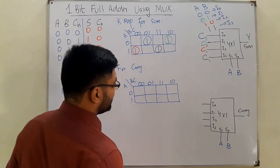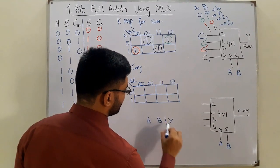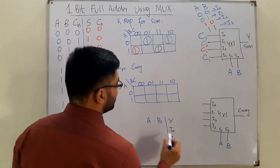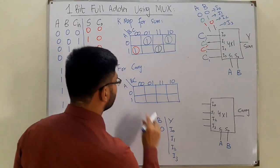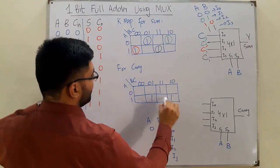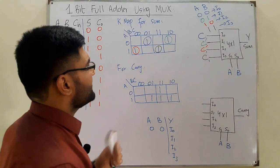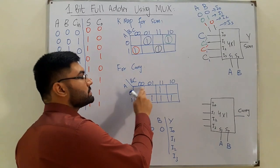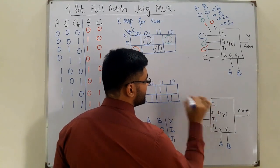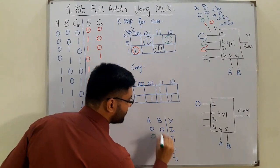For the carry K-map, filling in: 0, 0, 0, 1, then 0, 1, 1, 1. With A=0 and B=0 (I0), those two blocks have no ones, so I0 = 0.